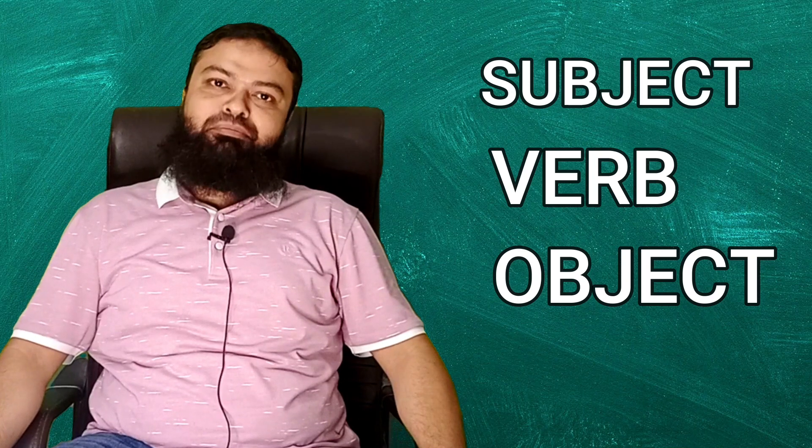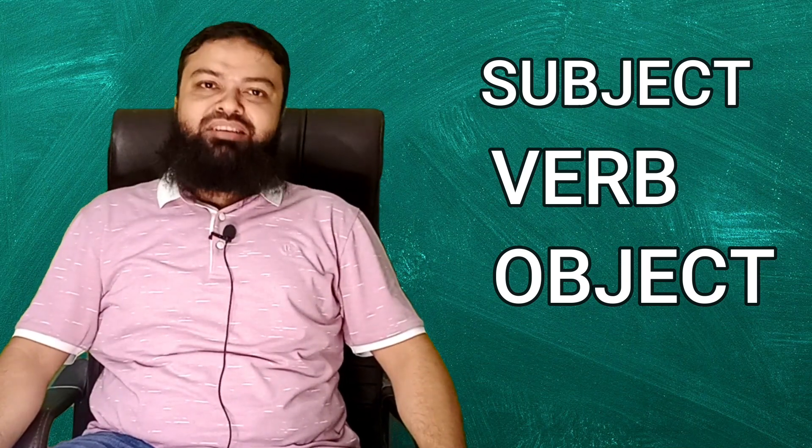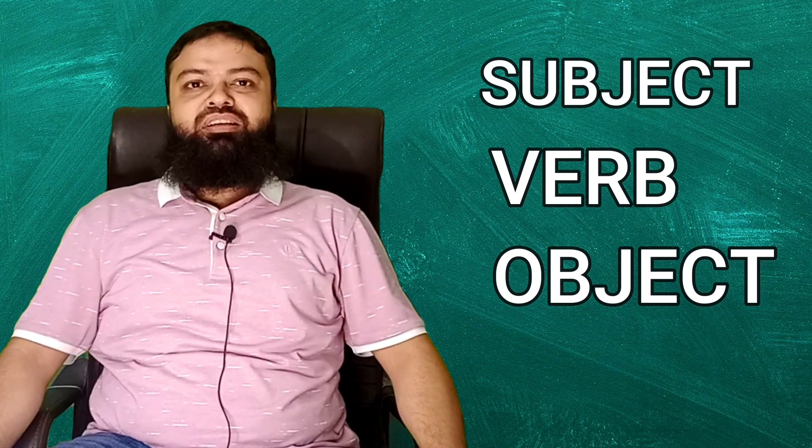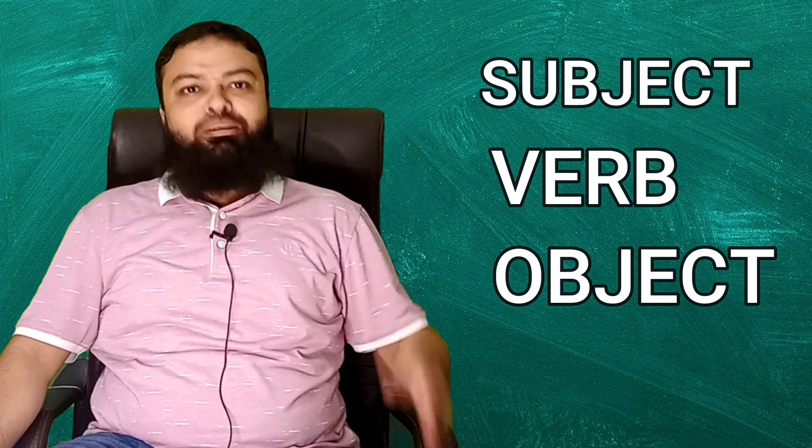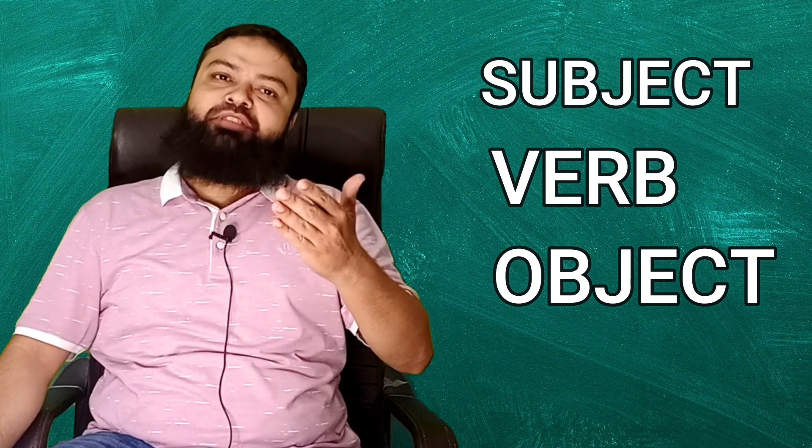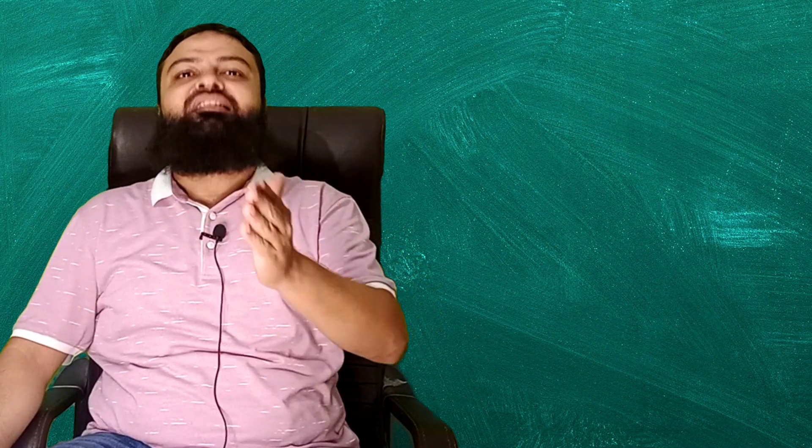For example: write, eat, run, catch, smile, discuss - these all are verbs. The third one is object. The person or a place on which some work is done is an object. For example, Aslam beats Yasir. In that sentence, Yasir is an object.